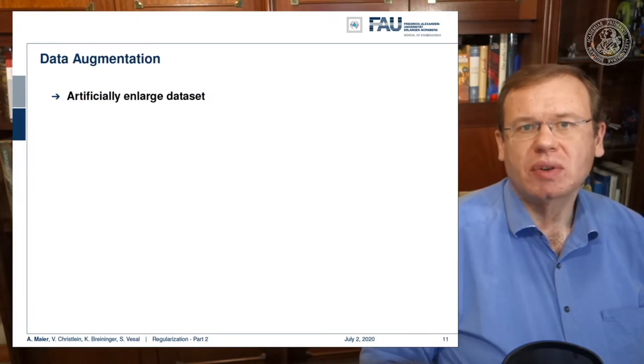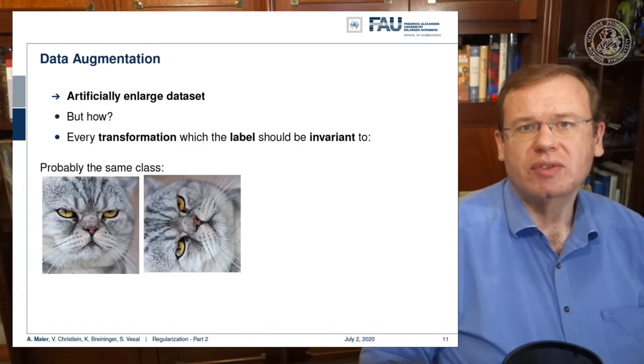Another very useful technique is data augmentation. The idea here is to artificially enlarge the data set. There are transformations on the label which should be invariant to the class. So let's say you have the image of a cat and you rotate it by 90 degrees, it still shows a cat.